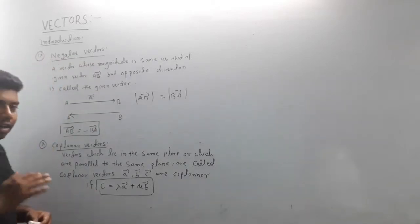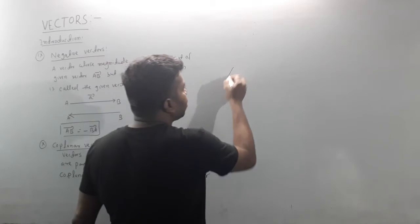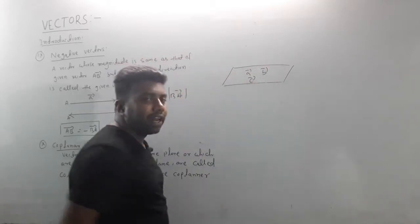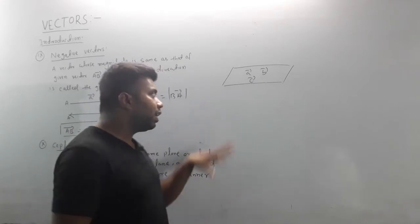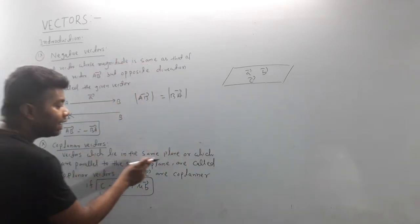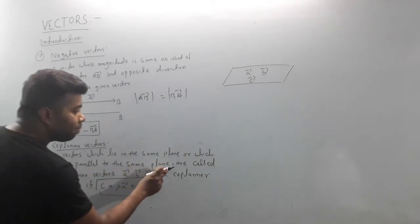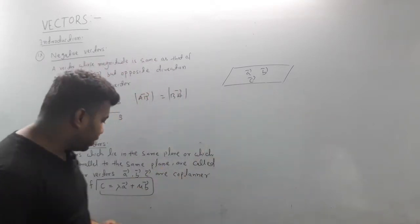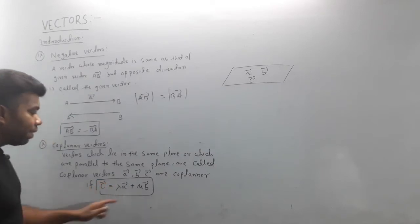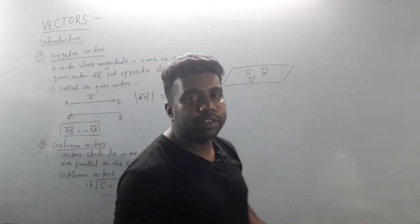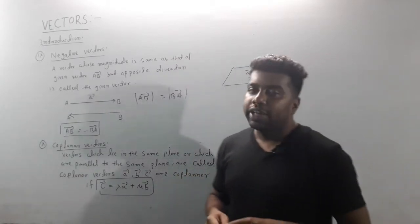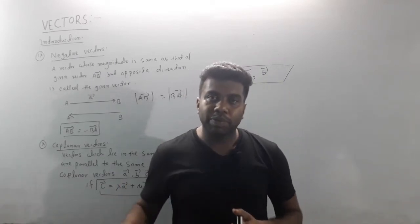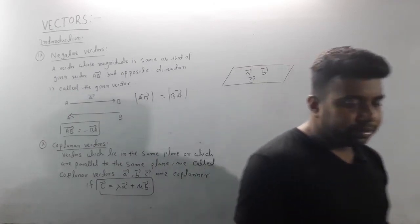Next is the coplanar vector. All vectors that lie in the same plane are called coplanar vectors. Vectors A, B, and C are coplanar if vector C equals lambda times vector A plus mu times vector B, where lambda and mu are some scalar constants. This is the introduction to vectors — part one of the vector series. Thank you for watching.